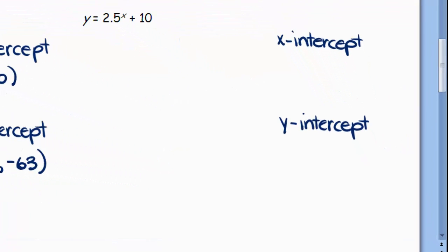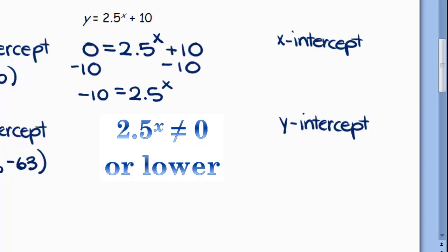For the next one, do the same thing. For the x intercept, let y be 0, and then solve for x. I would minus 10 from both sides. -10 = 2.5^x. Here we have a problem because an exponential by itself isn't ever going to be 0 or less. There is no number you can put in for x that makes 2.5^x equal to negative 10. That means there is no x intercept, so I write none.